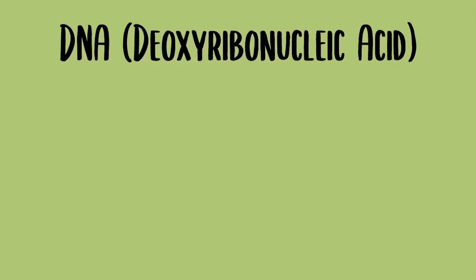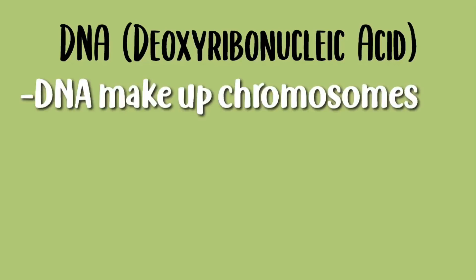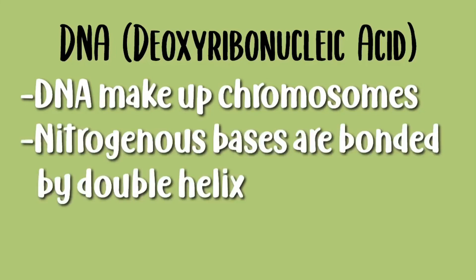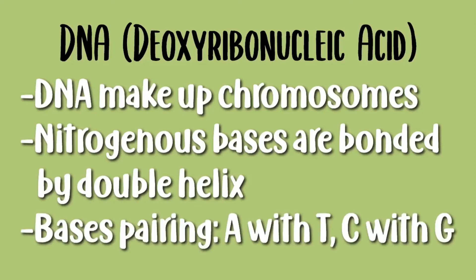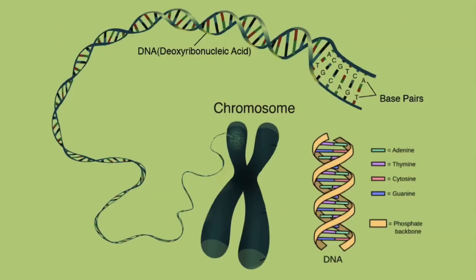Now let's talk about DNA. DNA stands for deoxyribonucleic acid. DNA makes up chromosomes and DNA also has nitrogenous bases that are bonded by a double helix. The base pairings are A with T and C with G. As you can see in the image, the base pairs A with T and C with G are bonded by the double helix to form DNA, and the long strands of DNA make up chromosomes.